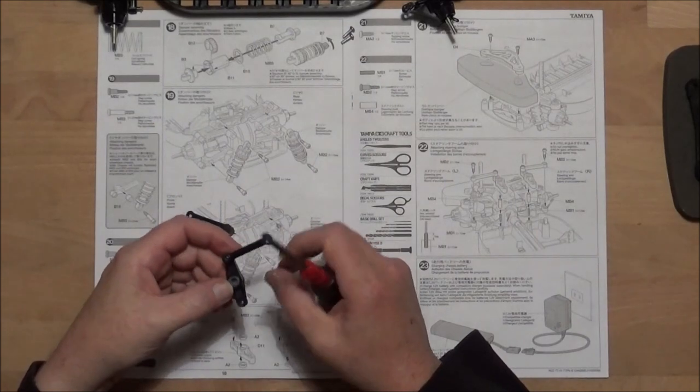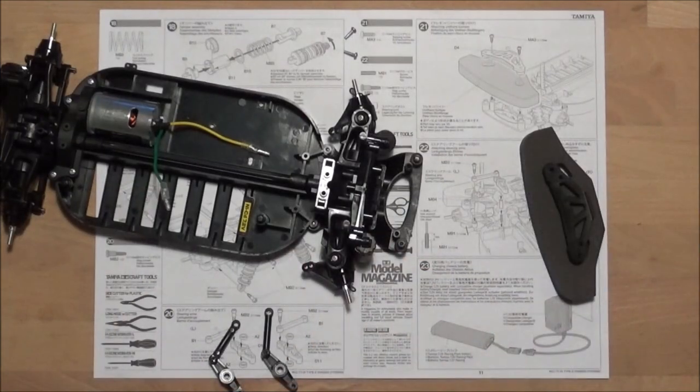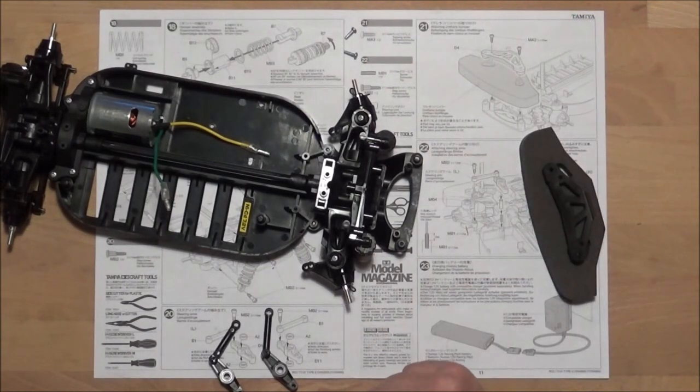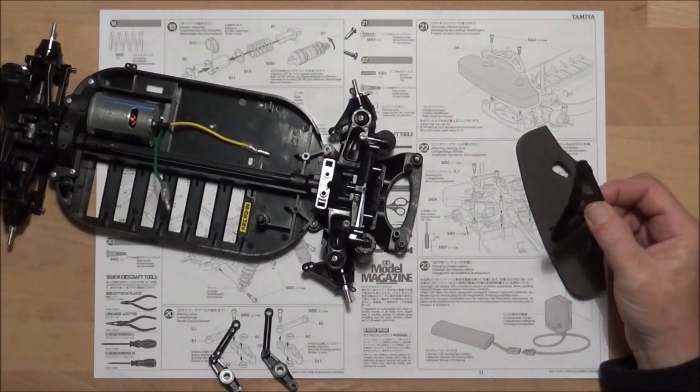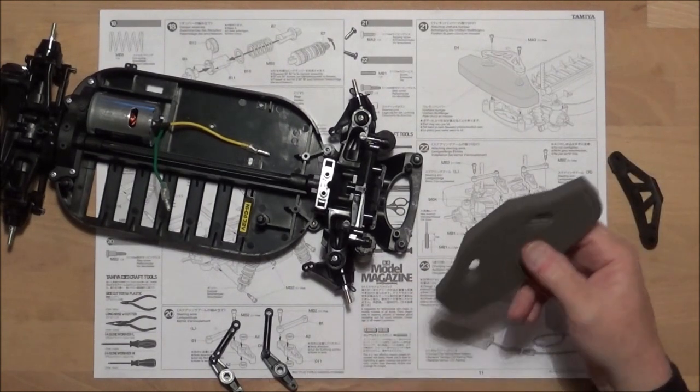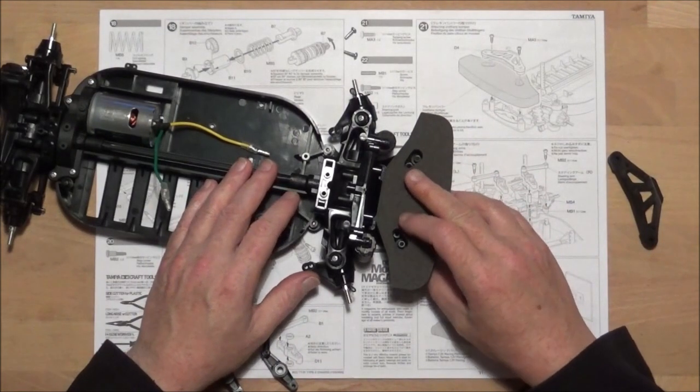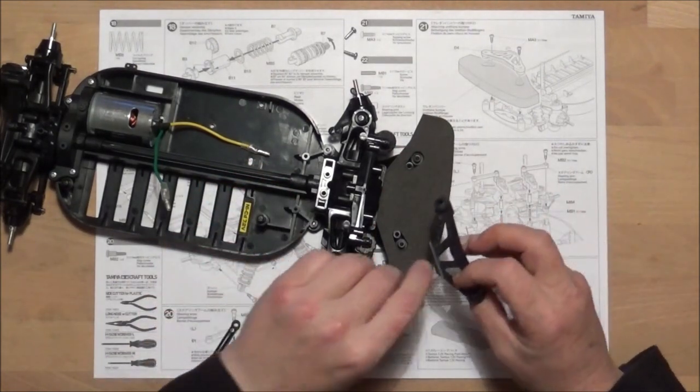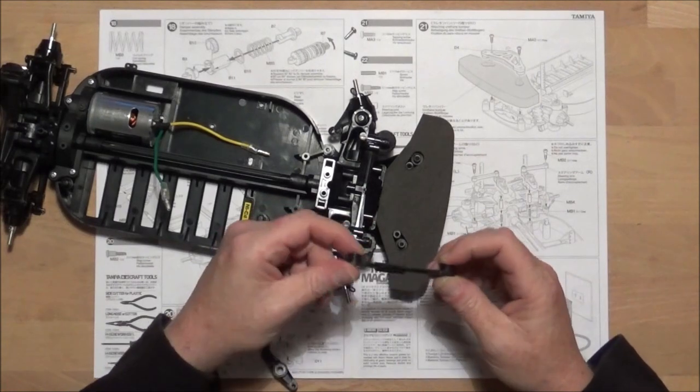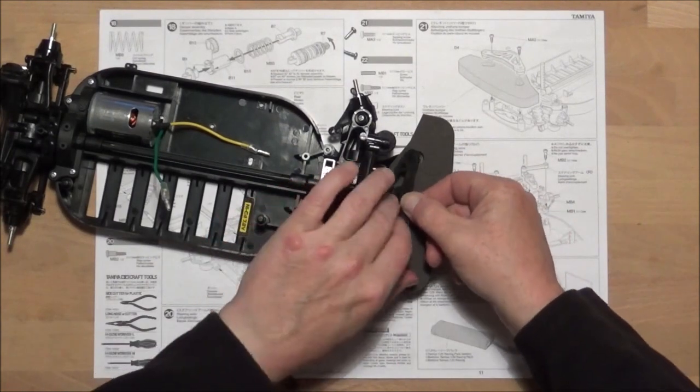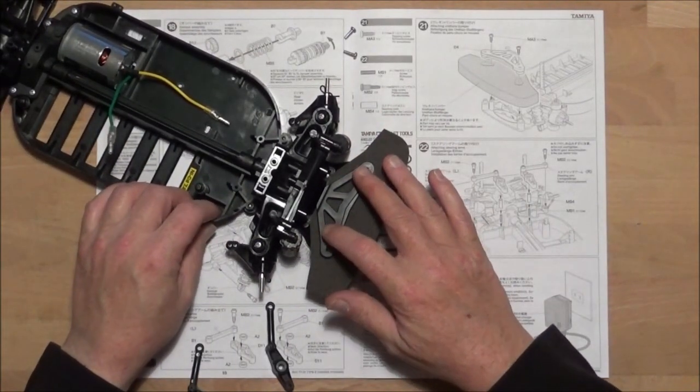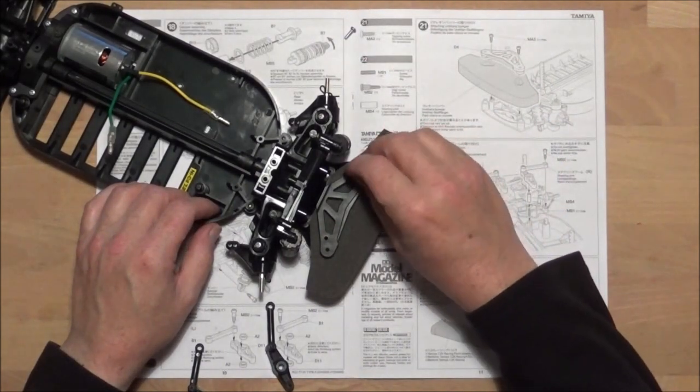Step 21 is attaching the urethane bumper. For that we're going to need two MA3s which are the 3x10mm tapping screws, plastic part D4 and the urethane bumper. It's just a case of pushing it home, checking the orientation so the two droopy down bits, sticky out bits go over there, and then it's just a case of screwing them through those two holes there.